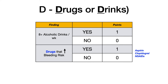D is our last letter and actually stands for two different things: drugs or drinks. For drinks, if the patient consumes eight or more alcoholic drinks per week, that's one point; if no, zero points. For drugs, we're talking about drugs that increase the bleeding risk — specifically antiplatelet agents like aspirin and clopidogrel, and NSAIDs. If the patient is on drugs that increase bleeding risk, that's one point; if no, zero points.